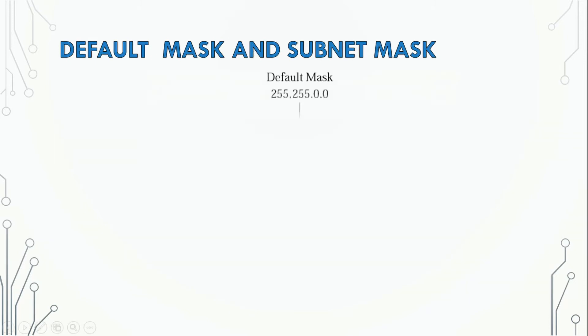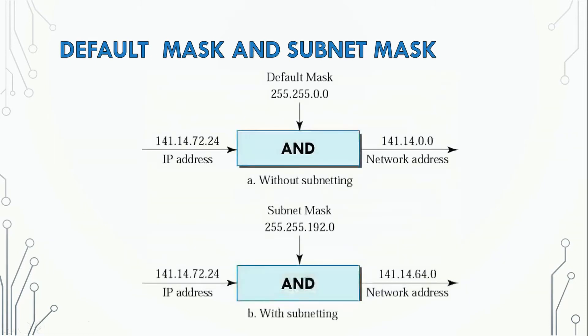Now we can look at the subnet ID. When we use the default mask, we can identify the IP address.